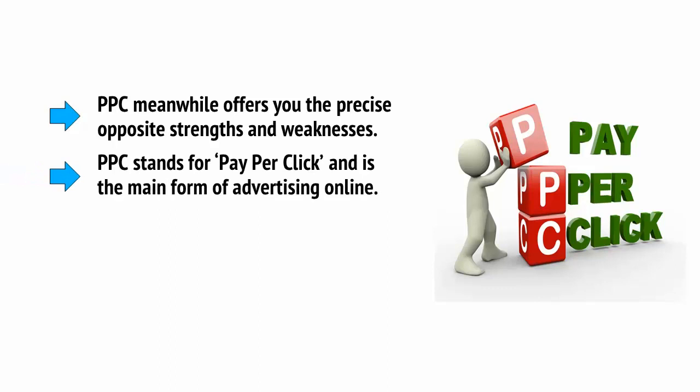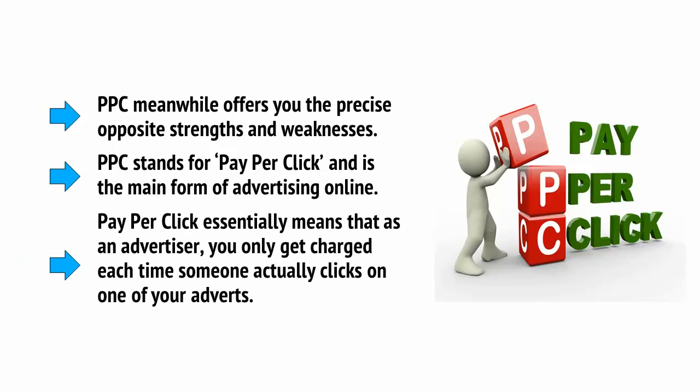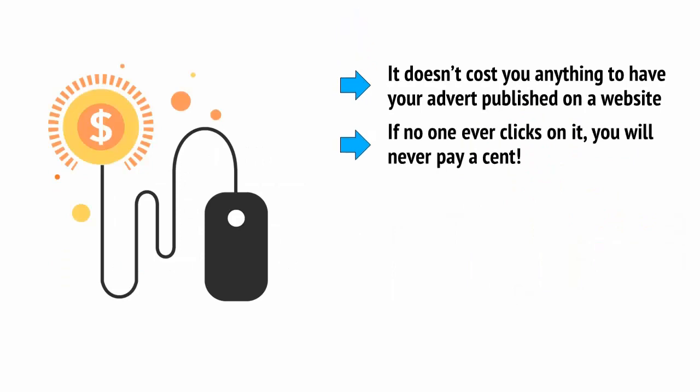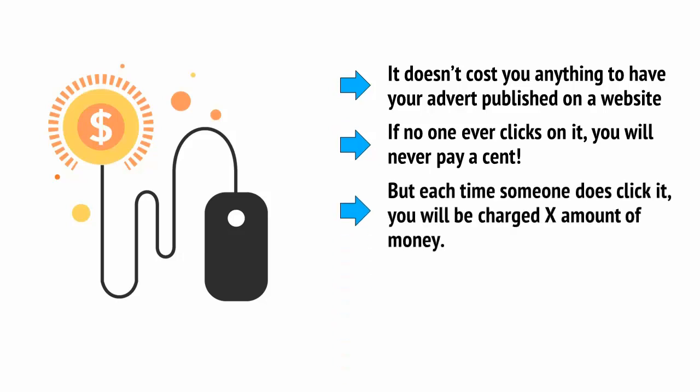PPC stands for pay-per-click and is the main form of advertising online. Pay-per-click essentially means that, as an advertiser, you only get charged each time somebody actually clicks on one of your adverts. In other words, it doesn't cost you anything to have your advert published on a website. If no one ever clicks on it, you'll never pay a cent. But each time someone does click on it, you'll be charged a set amount of money.